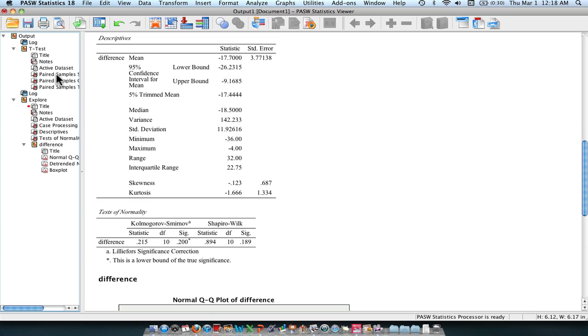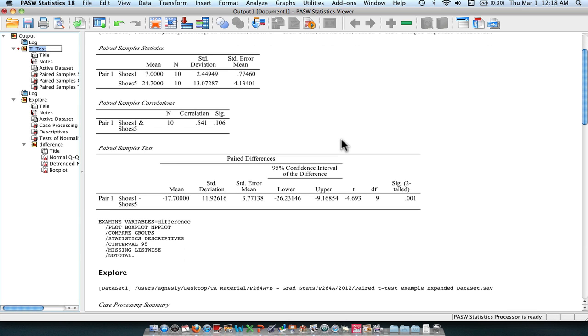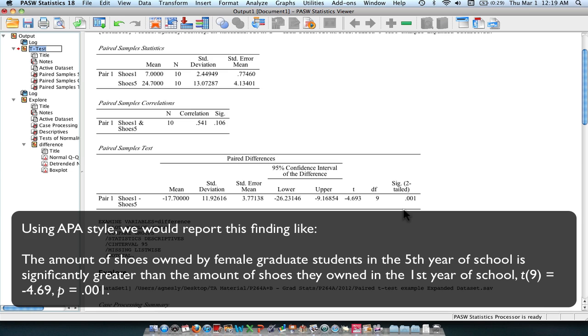So let's go ahead and look back to our t-test output. You can see here, this mean right here, all this is is a difference score between the two means here. So the difference between 24.7 and 7 is 17.7. To get our t-value, we're going to divide this mean difference over the standard error of the mean here. And that should give us our calculated t with 9 degrees of freedom, which is n minus the number of pairs minus 1. So we have 10 pairs and it is 9. And we can see that our test is statistically significant, meaning that there is a significant difference in the number of shoes in the first year of grad school and the number of shoes in the fifth year of grad school.